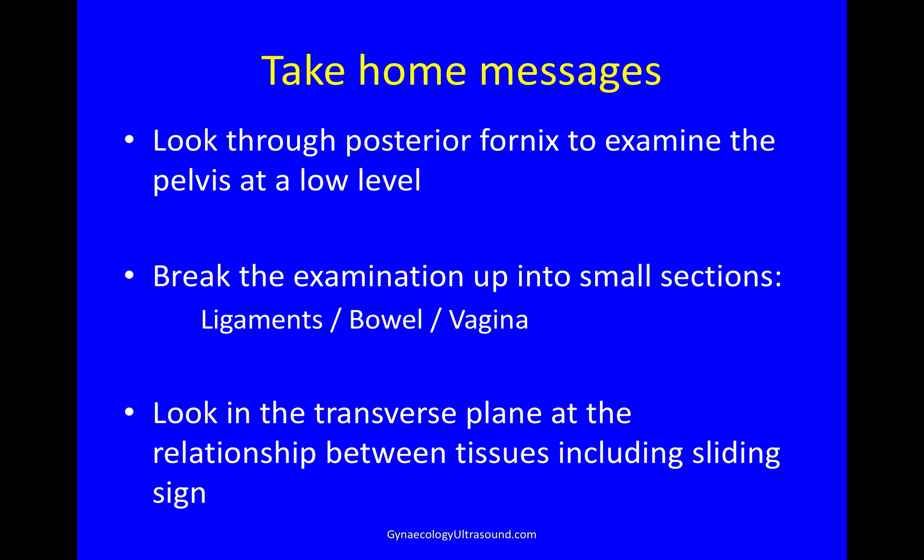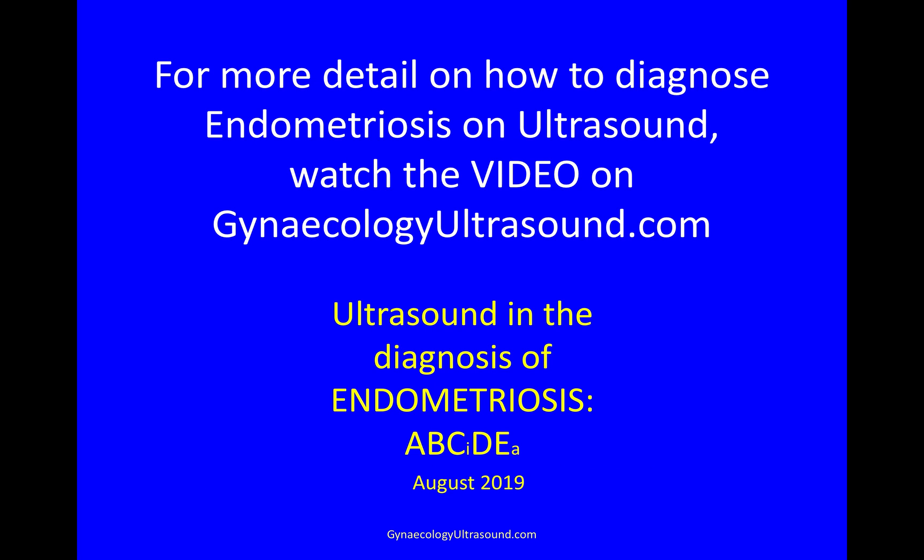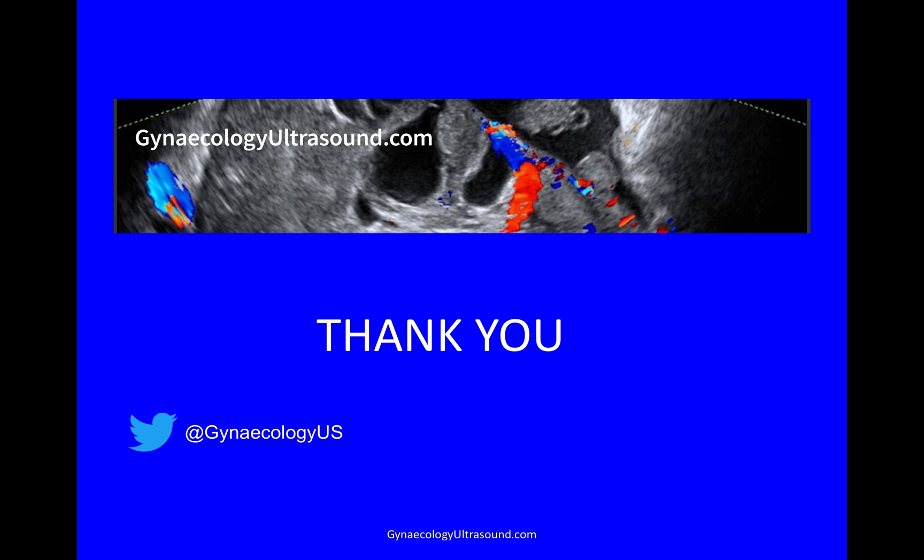Some take-home messages: look through the posterior vaginal fornix to examine the pelvis at a low level. Break the examination up into small sections — ligaments, bowel, vagina. And look in the transverse plane at the relationship between tissues, including the sliding sign. For more details on endometriosis and ultrasound, there's a video on the website. Thank you.